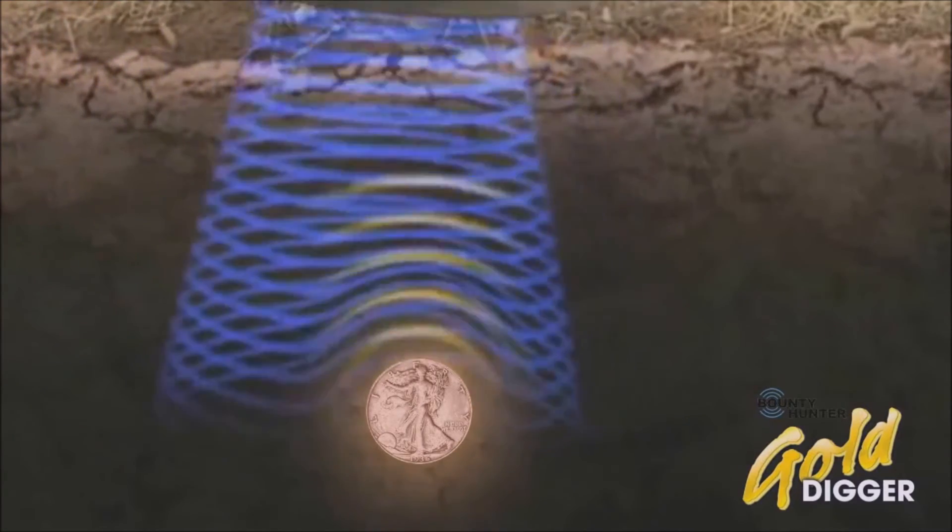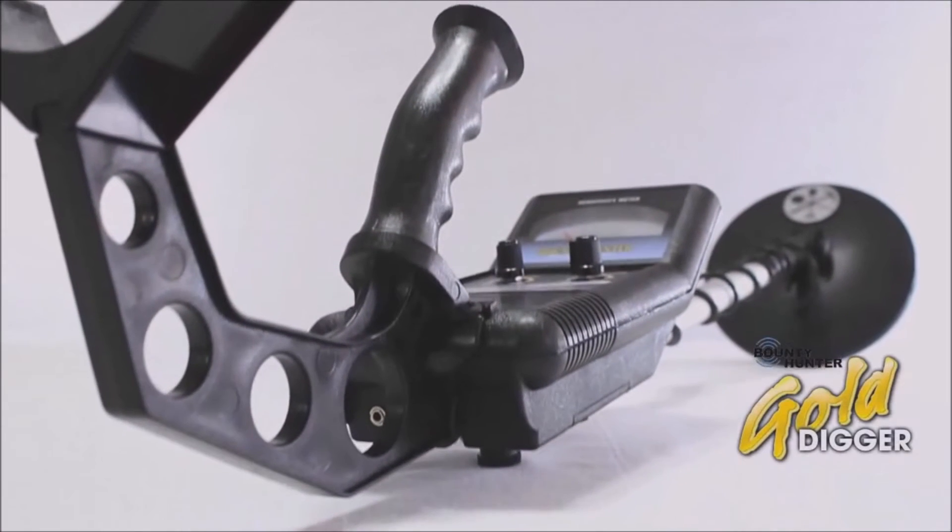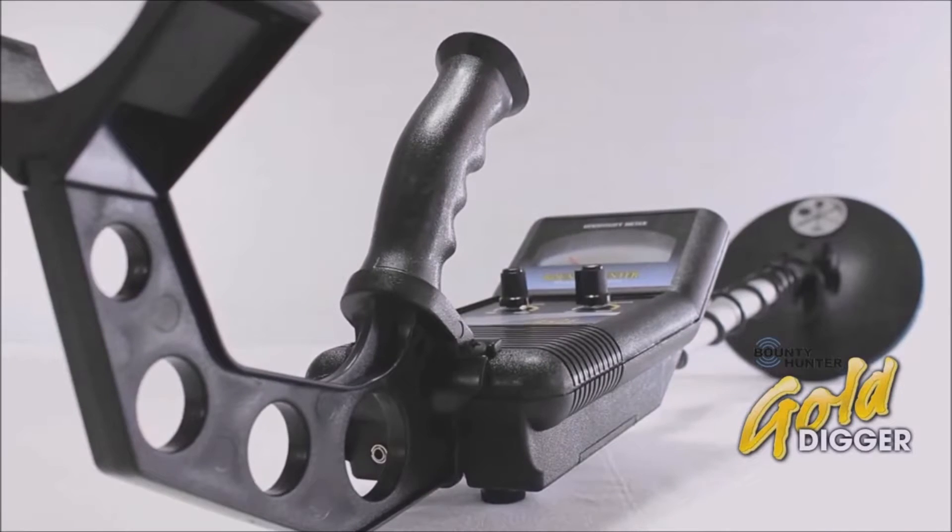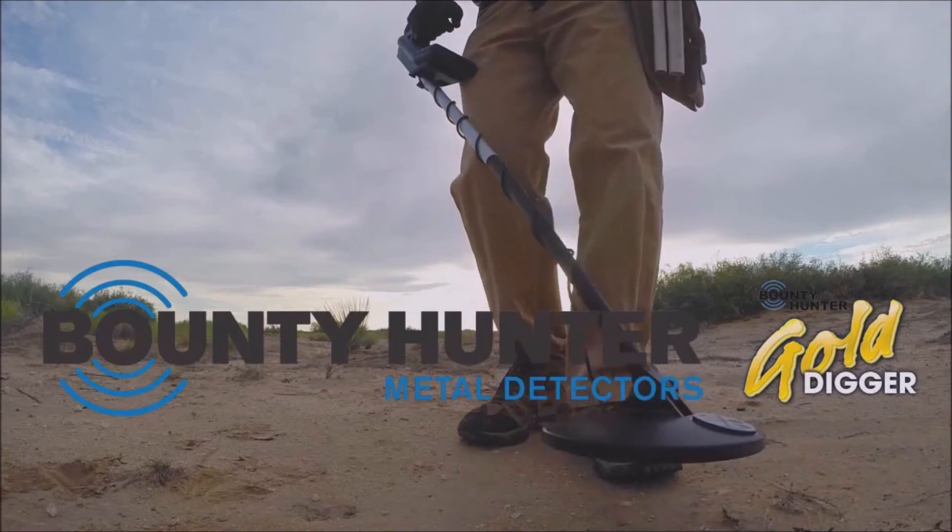Larger targets can be detected much deeper. The Gold Digger operates on two nine volt batteries and comes with headphones and an easy to understand user's manual. Bounty Hunter Gold Digger - what will you find?